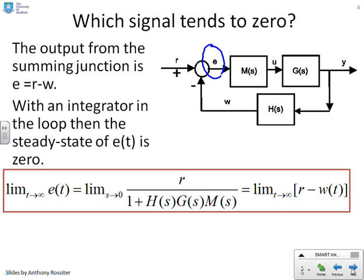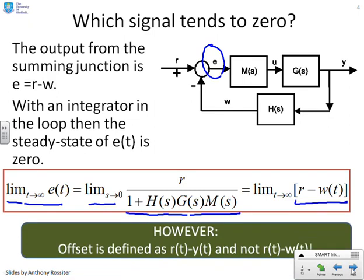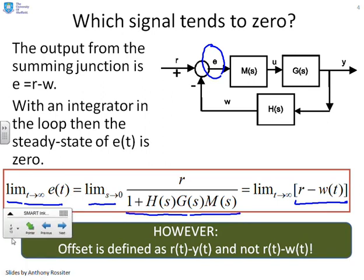Here's the formula: the limit as T goes to infinity of E of T is given as the limit as S goes to zero of R over 1 plus H of S times G of S times M of S. And the key point is that this equals the limit as T goes to infinity of R minus W of T. However, here's a warning: offset is strictly defined as R minus Y, whereas the signal we've calculated using the final value theorem is R minus W — not the signal we want, which is R minus Y. So we need to ask what are the repercussions of this observation.